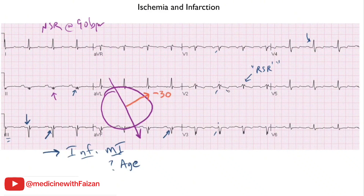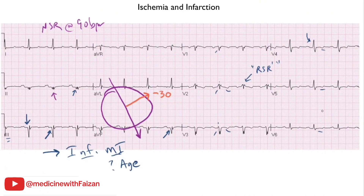What we do see are T wave inversions in V1 through V6 — V6 is more biphasic. These T waves clearly don't go in the same direction as the QRS complex as they should, but they are not terribly deep and there are no ST changes. Most people would consider this non-specific ST-T abnormalities.